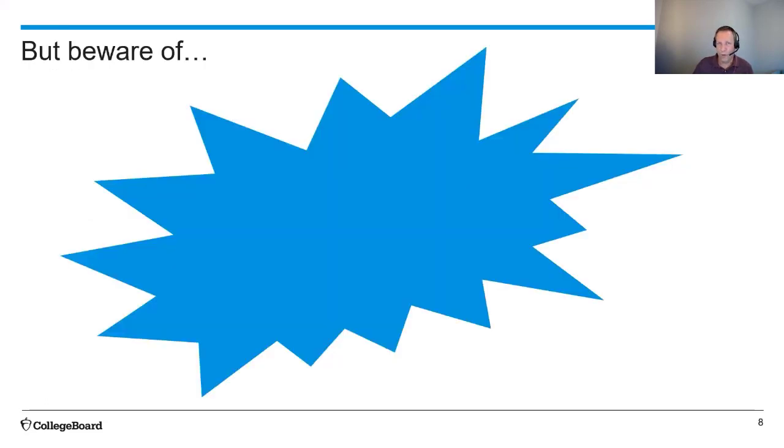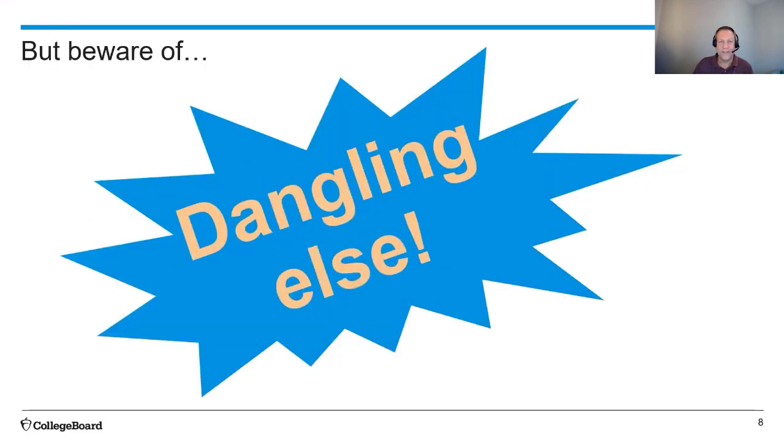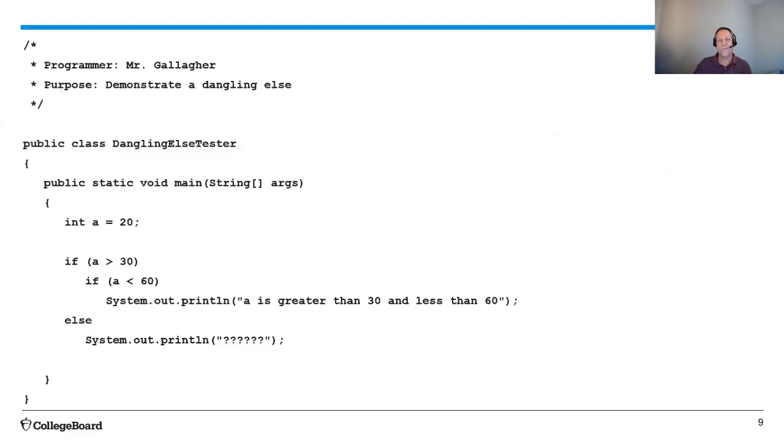One thing to be aware of, though, and that's the dangling else. So what's a dangling else? Well, here's another program. And this one says I've got an integer called a that I set equal to 20. And you'll notice the first if statement I have, again, here's a pair of nested if statements. I'm looking to see if a is greater than 30. It's not. So where does it go?